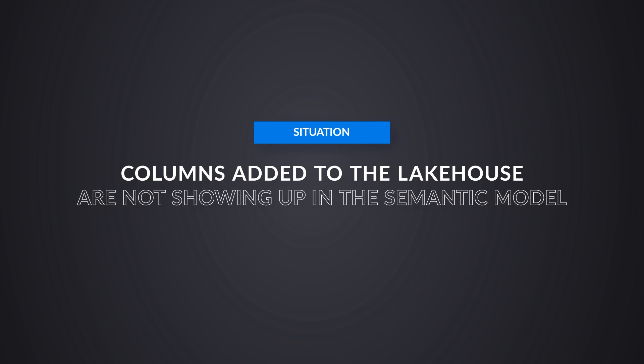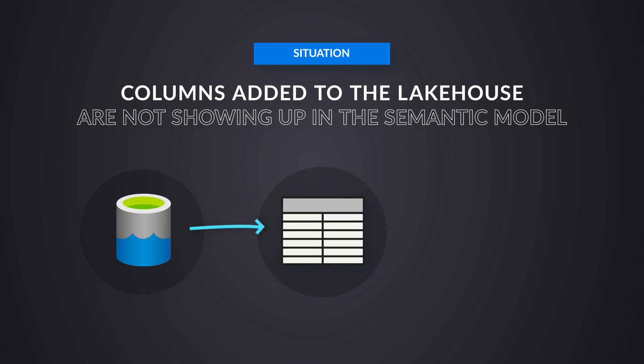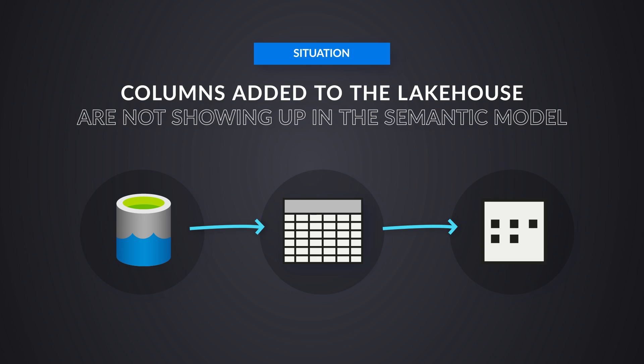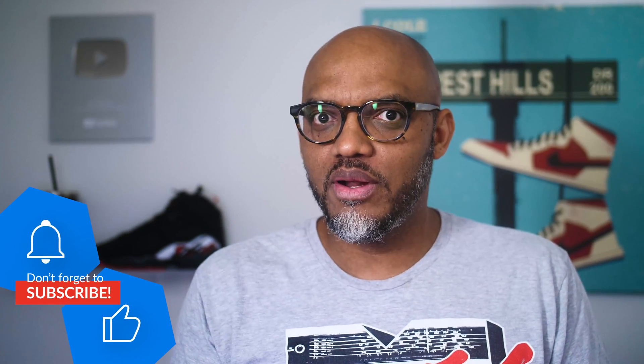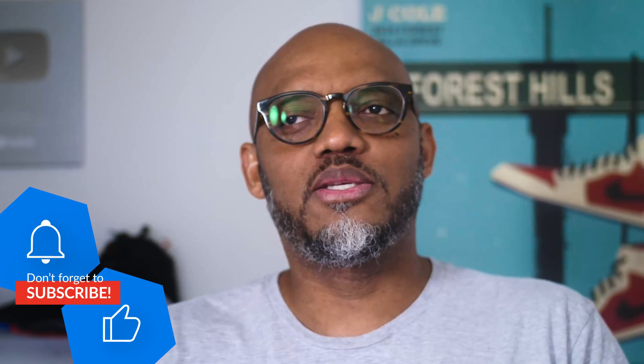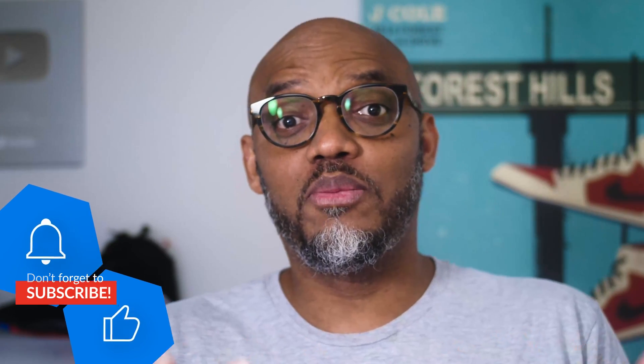They were like, we're creating this lake house. We're adding new columns to some of the tables — some of the managed tables in the lake house — but they're not showing up in our semantic model. How do we get that to work? When they first asked me about this, I was like, I know we had this question before, but I forgot how I figured it out. So I had to go do some tinkering, and after tinkering I figured out how to do it. In this video, I'm gonna show you.